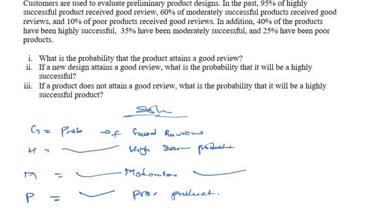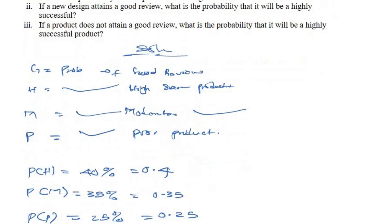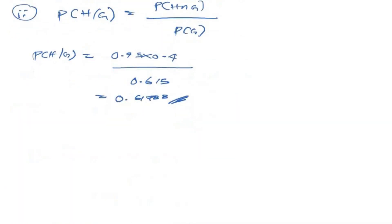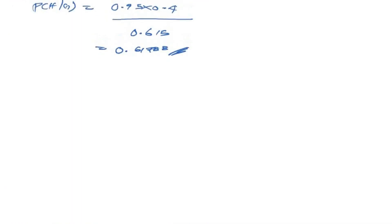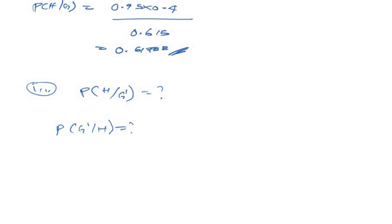For Part III, if a product does not attain a good review, what is the probability it will be highly successful? We need P(H|G'), the probability of highly successful given NOT a good review. To find this, we need P(H ∩ G') / P(G'), so we need to find P(G') first.